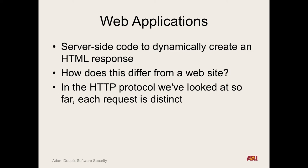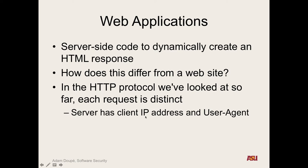We've looked at the HTTP protocol. When I make a request to the server, I say I want this resource, this method, and I'm speaking this version of HTTP, maybe I tell you my user agent. When I want to make another request, I don't say 'hey, you remember me from two minutes ago?' — I make a new request and say I want a GET request for this image, speaking HTTP 1.1. The server sees all HTTP requests coming in on TCP, so it knows the client's IP address and basically the user agent.